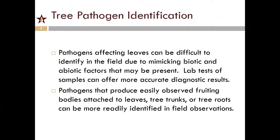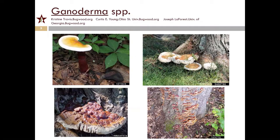With tree pathogen identification, what everybody needs to understand is that pathogens affecting leaves can be difficult to identify in the field due to the mimicking of biotic and abiotic factors that could be present. For accurate results, you really need to send samples into the lab. Pathogens that produce easily observed fruiting bodies that attach to trees, tree trunks, or tree roots can be more readily identified through field observations. A lot of the ones I'm going to talk about have leaf impact only.